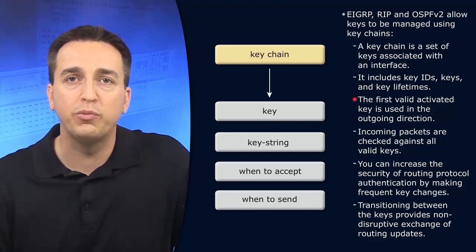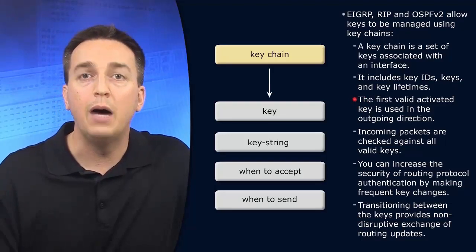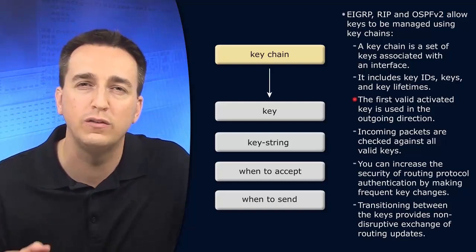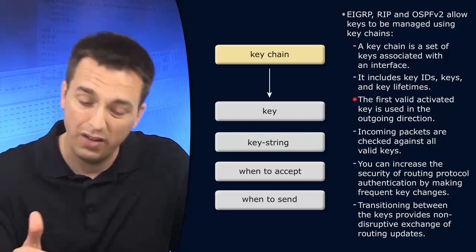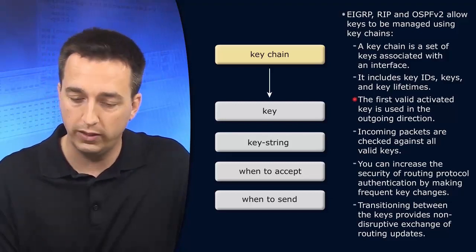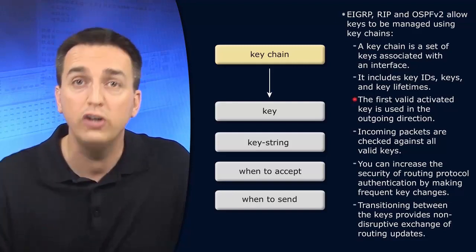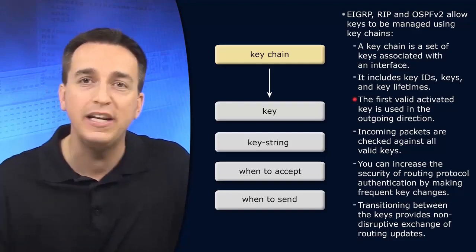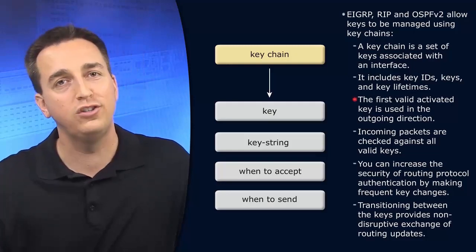So how does the process work? When we are sending a packet or trying to form a neighbor adjacency, the very first valid key — the first one that's active in the list — is used. So if we have 10 keys identified, we go down through them: 1's not valid, 2's not valid, 3's not valid, 4's valid — okay, we're going to use 4. Top-down processing, immediate execution upon a match. We use key 4 to generate our hash.